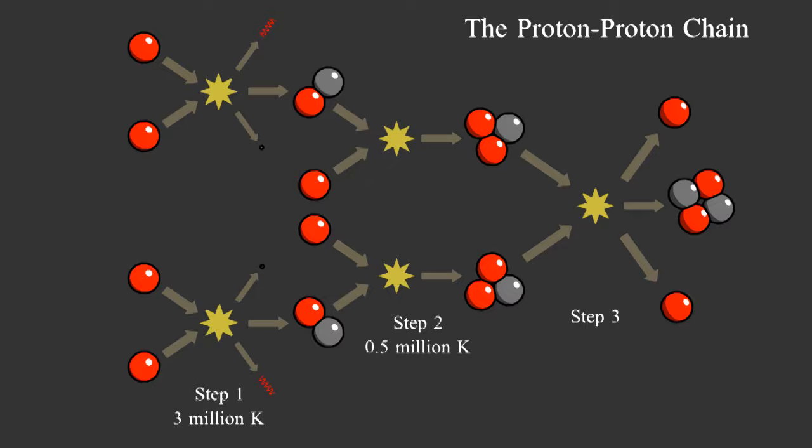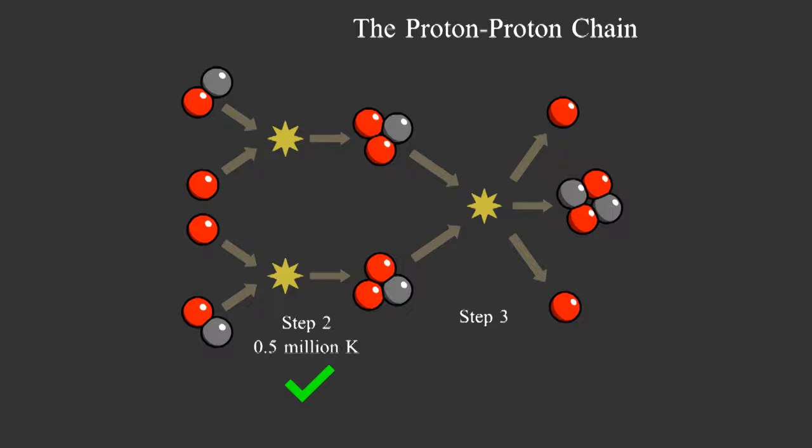Brown dwarfs can only do part of the proton-proton chain. Remember, the chain had three steps. They're hot enough to do the second step, but not the first step. They cannot convert hydrogen-1 into hydrogen-2, but they can convert hydrogen-2 into helium.